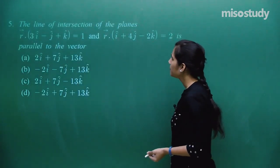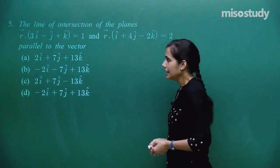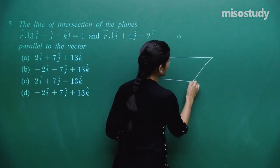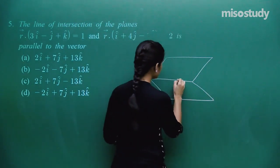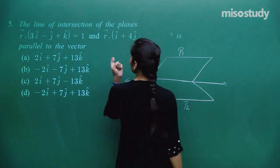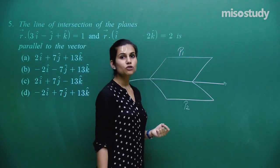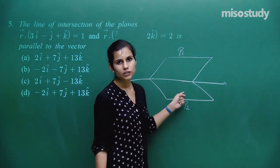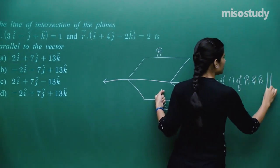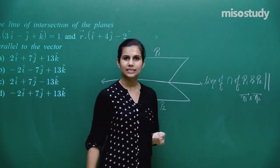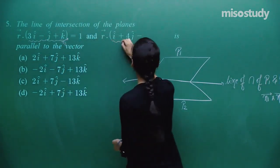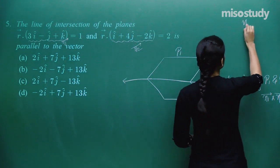The next question asks which vector the line of intersection of two given planes is parallel to. The key concept is that if two planes have a line of intersection, that line is parallel to N1 × N2, where N1 and N2 are the normal vectors of plane 1 and plane 2 respectively.